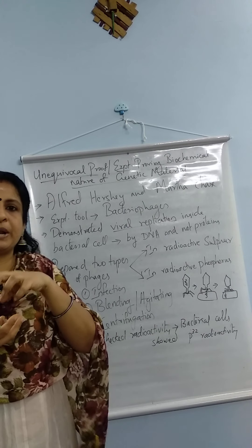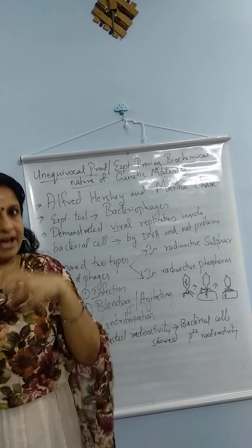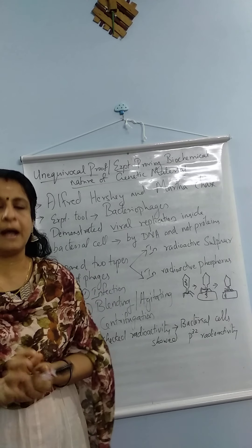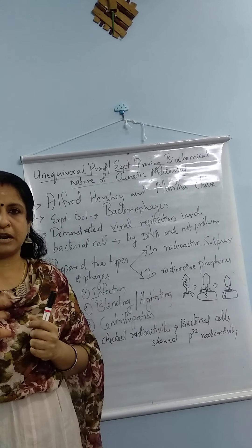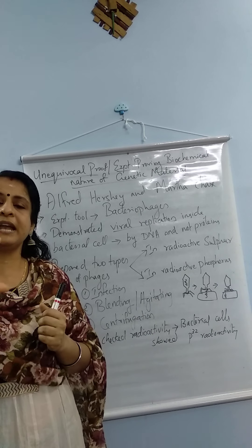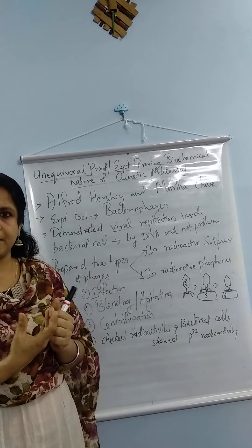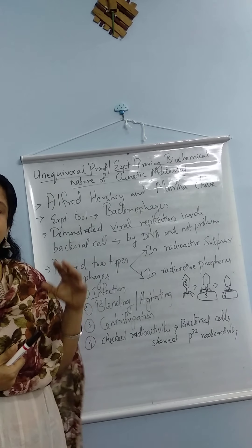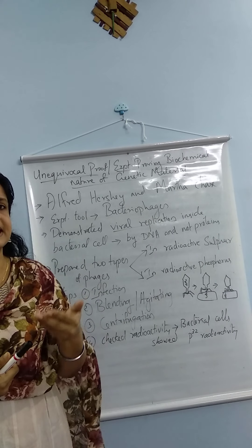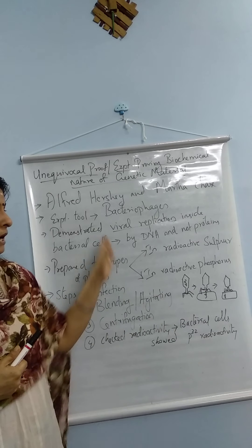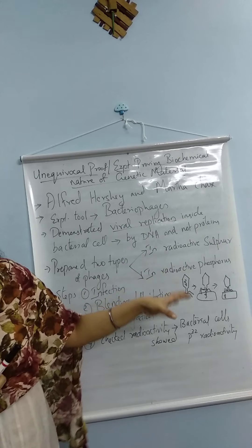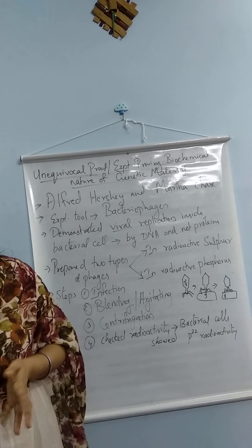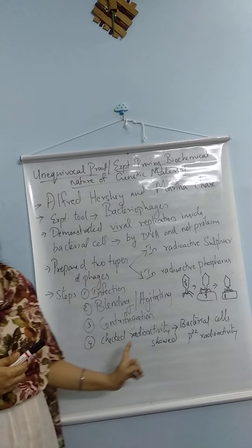Blending separates the bacteria from the bacteriophage protein coat. Then the next step was centrifugation. During centrifugation, light things go to the top (supernatant) and heavier things go to the sediment. Since viral coats are lighter than bacterial cells, viral coats are found in the supernatant whereas bacterial cells settle in the sediment.